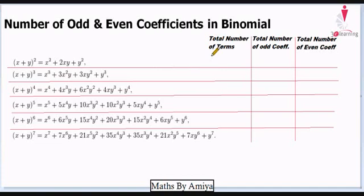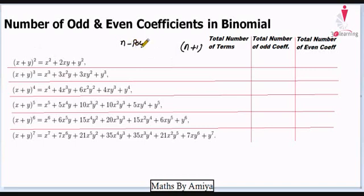Finding the total number of terms is always easy in binomial. If the power is 2, then the total number of terms is 3. So total number of terms is just one more than the power — that is n+1, where n is the power. So total number of terms in (x+y)² is 3. If you have cube then 4, for the fourth power it's 5, and so on.